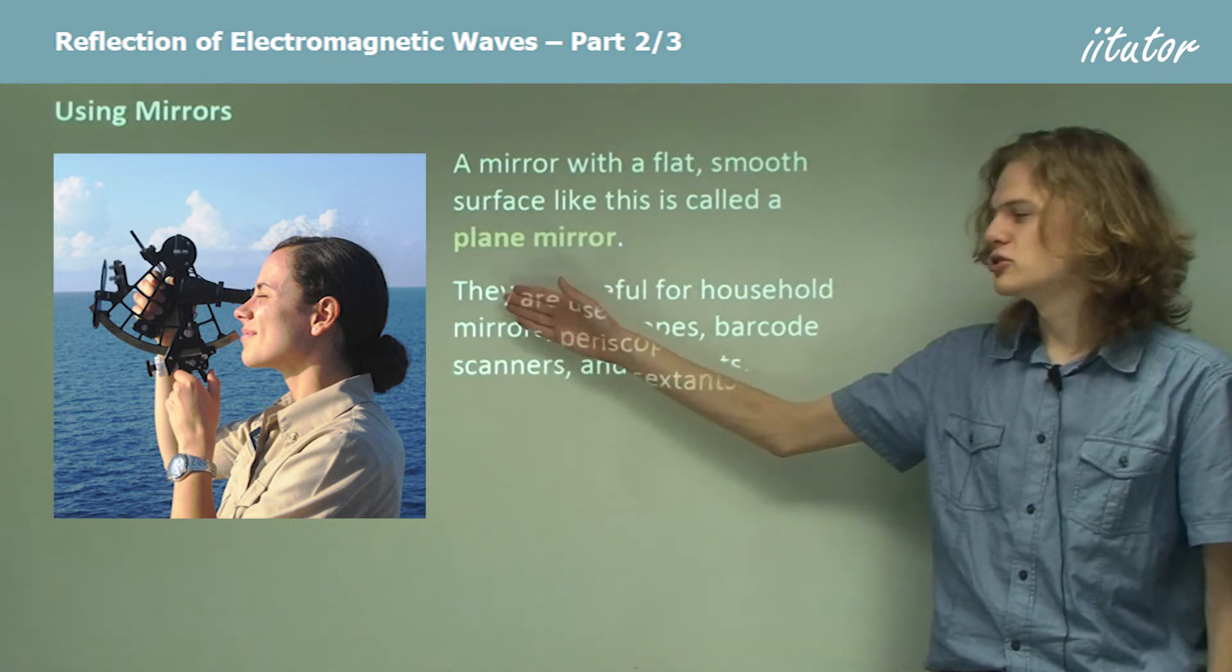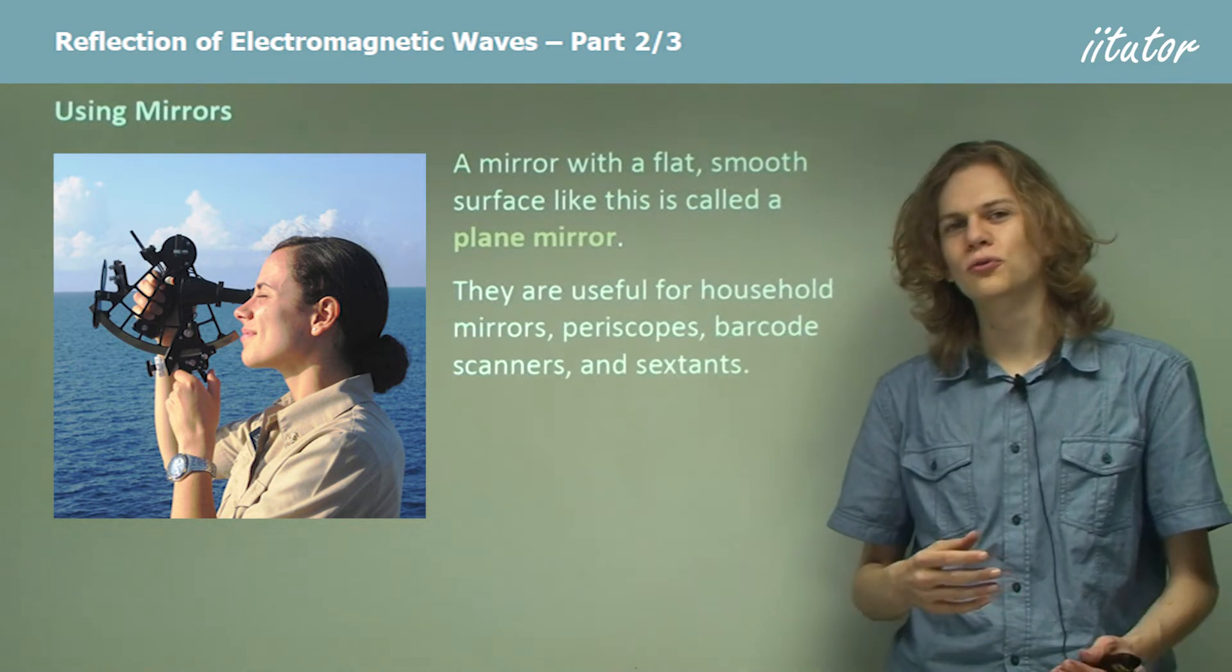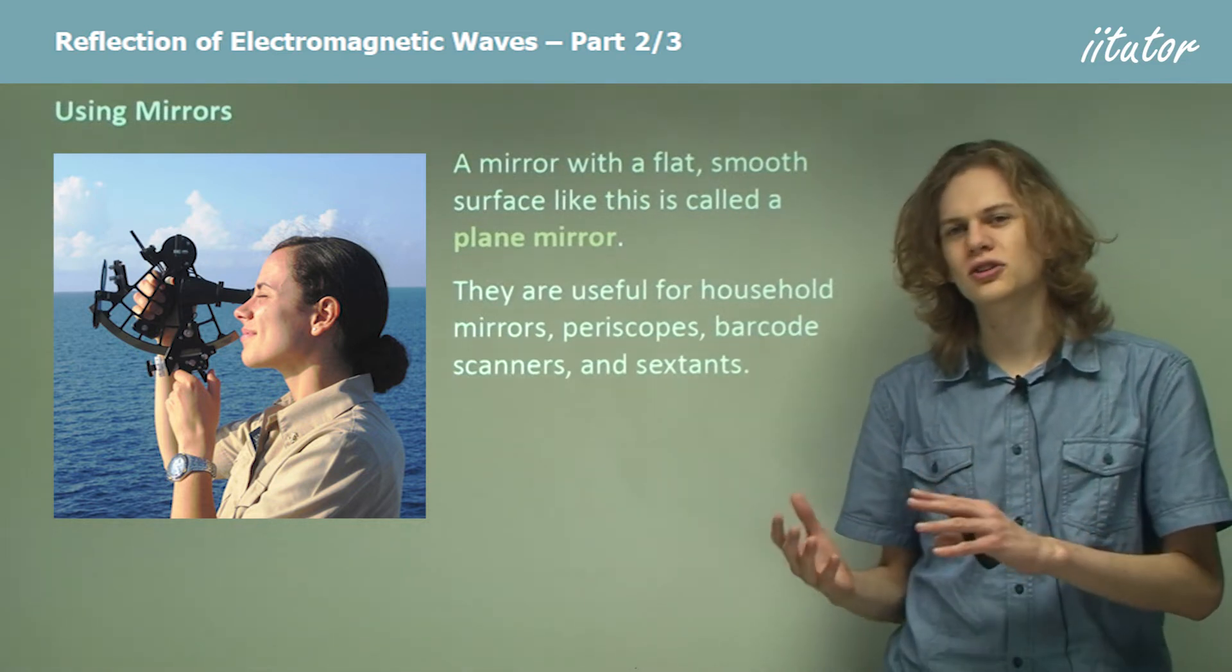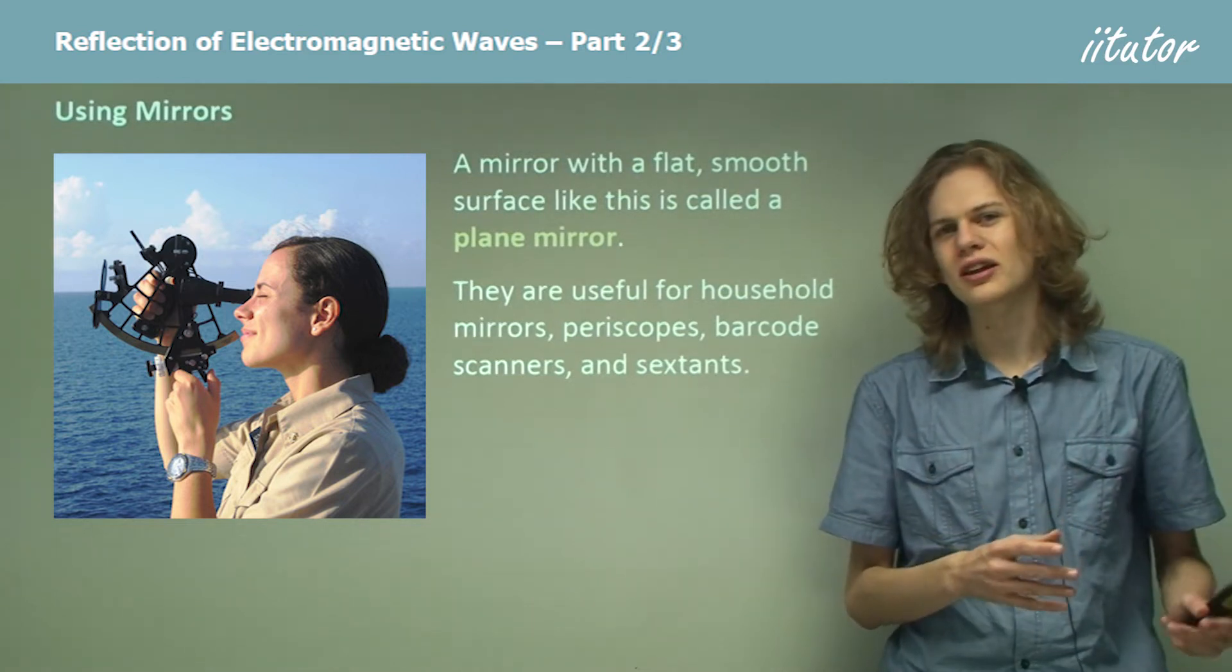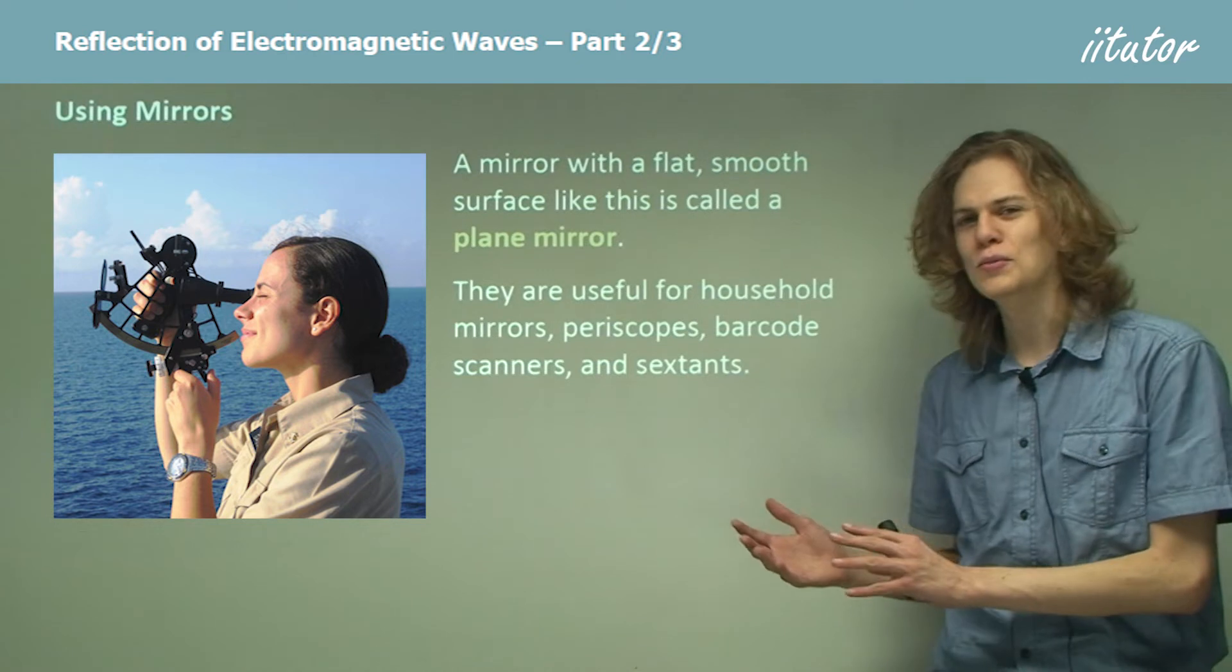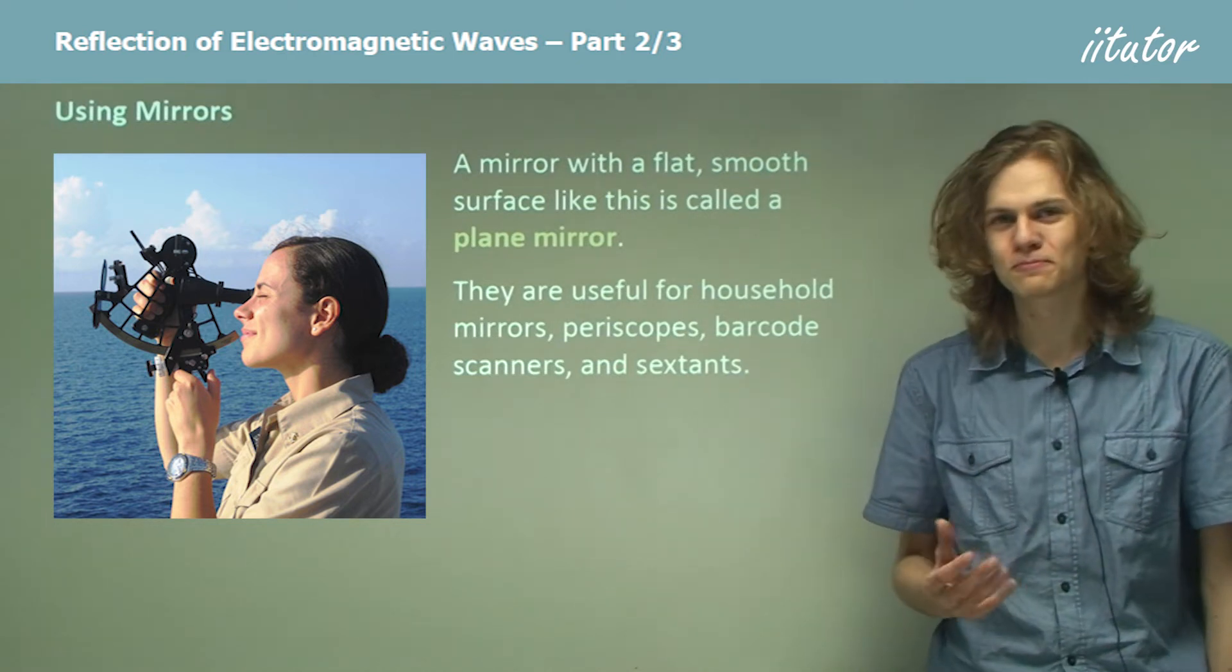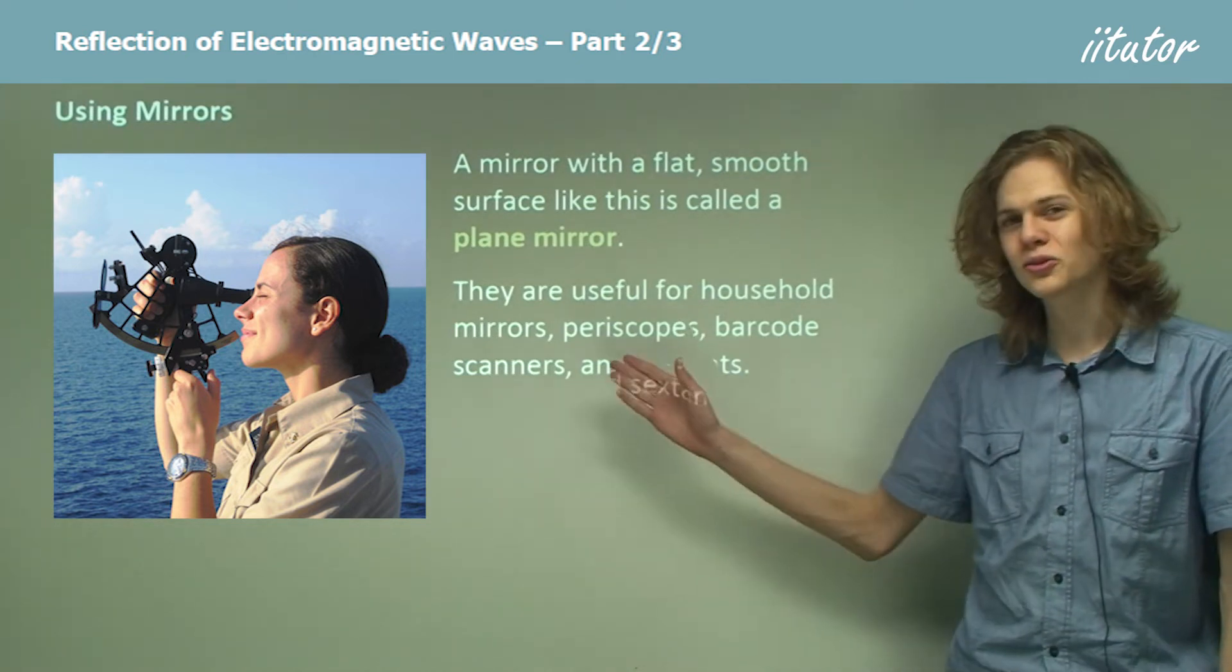And sextants, a navigation tool like this, which is very helpful for examining the position of stars and the sun in the sky. It was used more by ancient astronomers and ancient sailors than it is today, because of course today we have GPS. Although we can still use them to navigate.